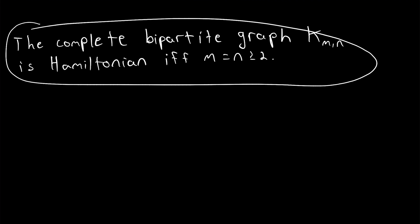The complete bipartite graph K_m,n is Hamiltonian if and only if m equals n and they're both greater than or equal to 2.